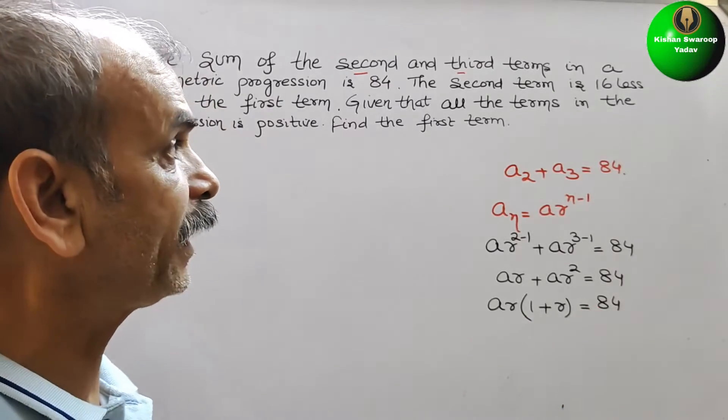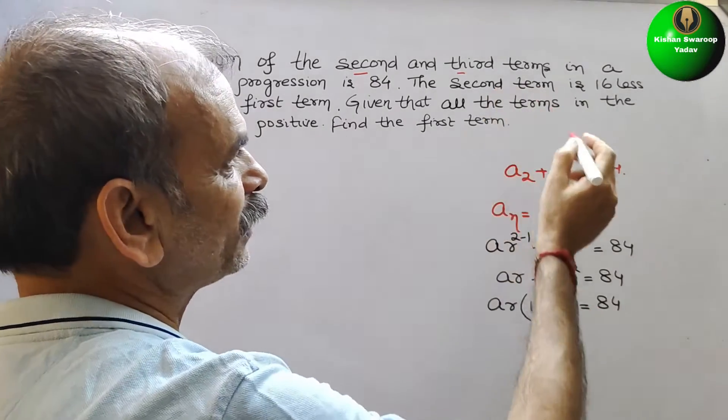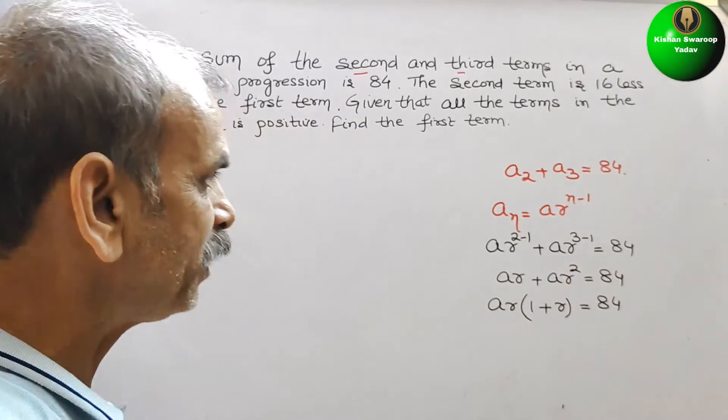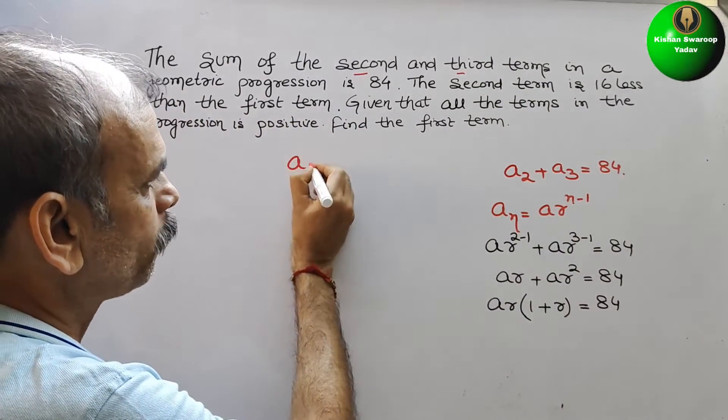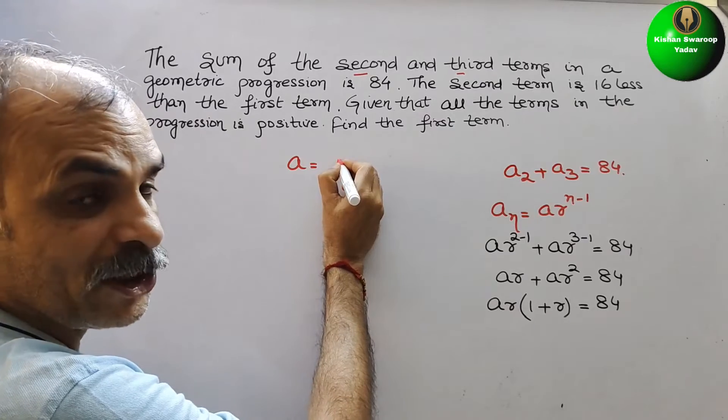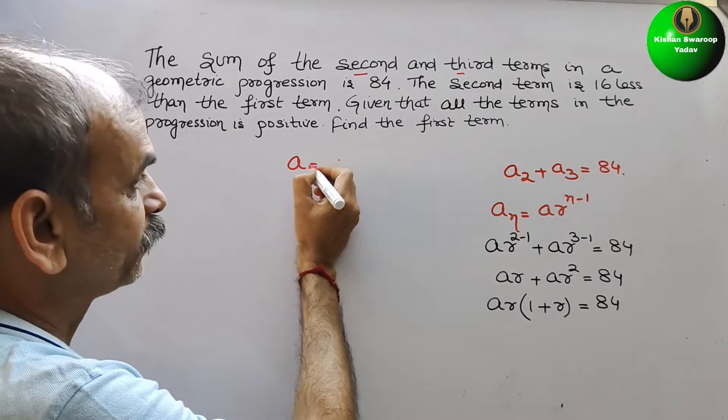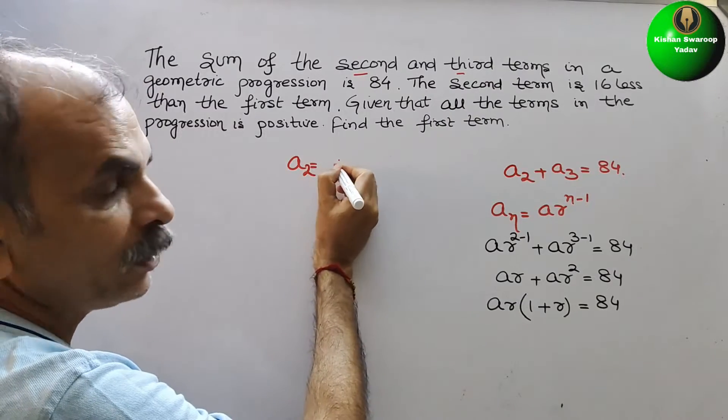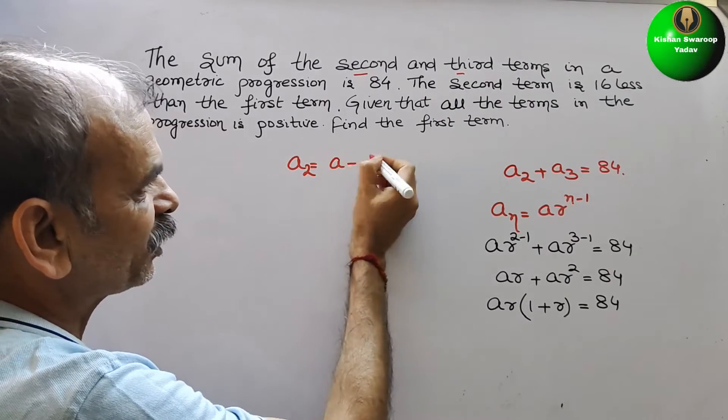Next, what they have told, see that the second term is 16 less than the first term. That means a2 is equal to a minus 16.